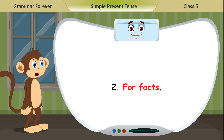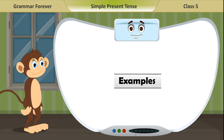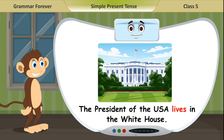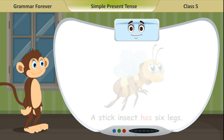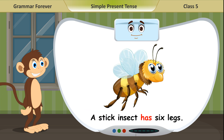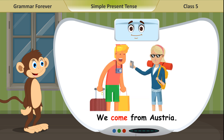We use the Simple Present Tense for facts. Examples: The President of the USA lives in the White House. A stick insect has 6 legs. We come from Austria.